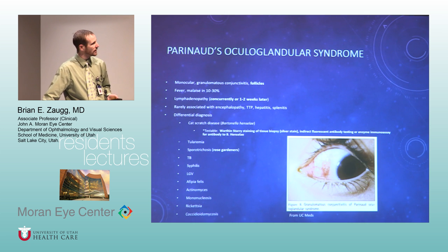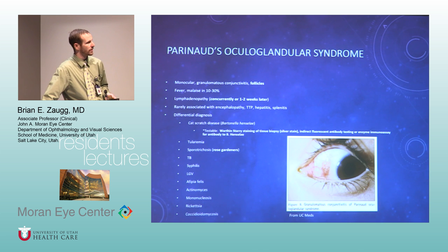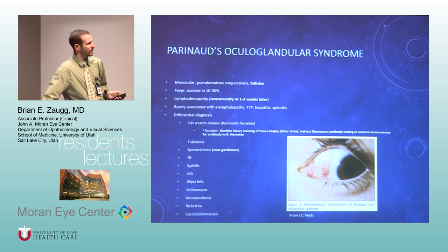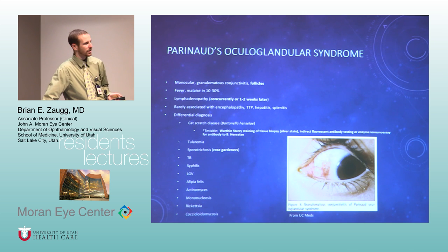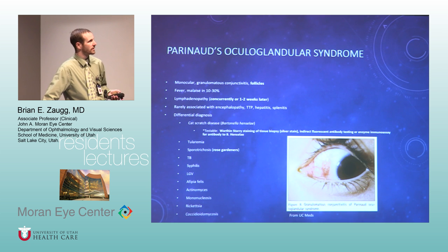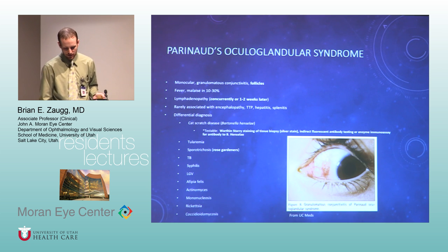Parinaud's disease comes up occasionally — usually lymphadenopathy and granulomatous follicles, with elevated lesions on the conjunctiva. Huge differential diagnosis; the biggest thing is cat scratch disease. Sporotrichosis comes up on step exams but doesn't really appear on the eye much. These are all the things that can cause granulomatous disease on the eye.